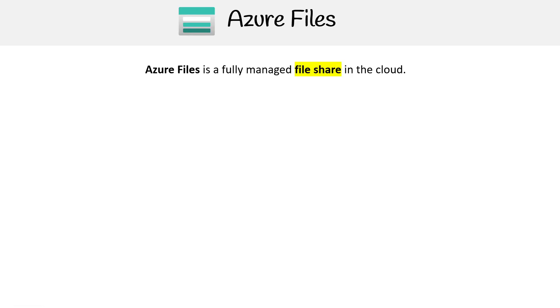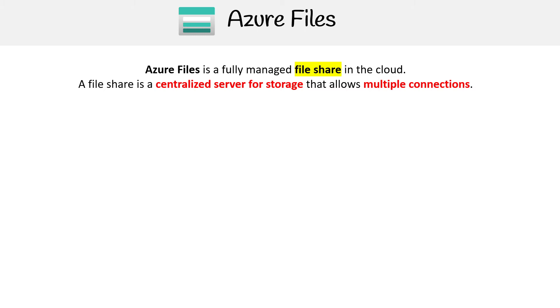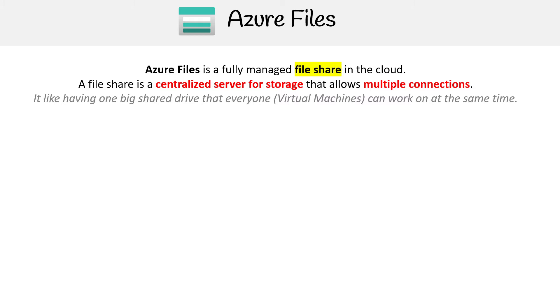Let's take a look at Azure Files. This is a fully managed file share in the cloud. The idea behind this is that it's like a centralized server for storage that allows multiple connections. I like to think about it as having one big shared drive that everyone can use or work on at the same time — and by everyone, I mean your virtual machines.